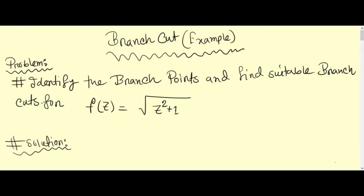Hi everyone and welcome to this lecture. We want to show an example of how you can find branch points and suitable branch cuts for a given multi-valued function. The problem is to identify the branch points and find suitable branch cuts for the function f(z) = √(z²+1).